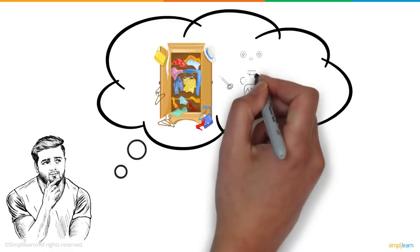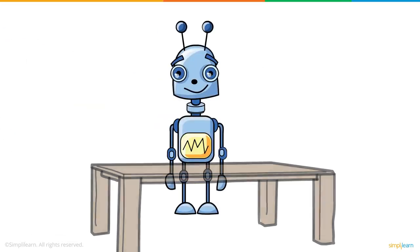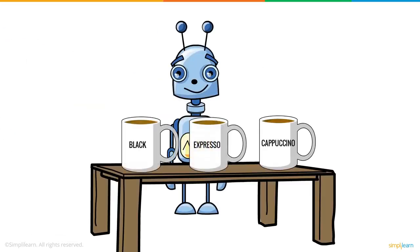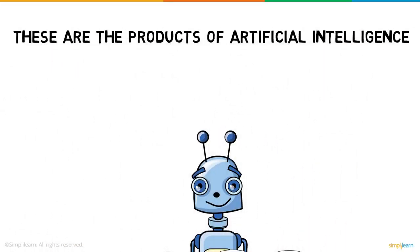Picture this: a machine that could organize your cupboard just as you like it, or serve every member of the house a customized cup of coffee. Makes your day easier, doesn't it? These are the products of artificial intelligence.